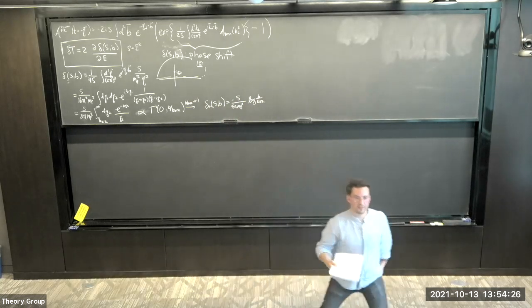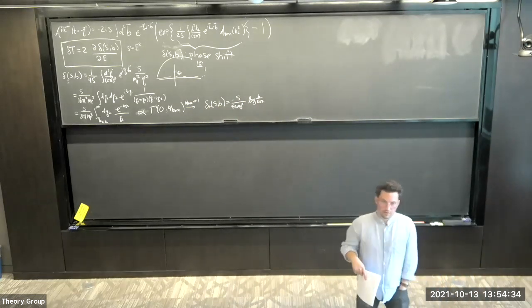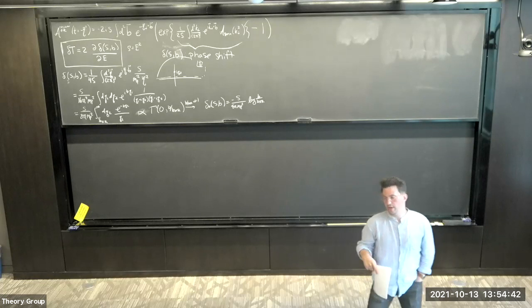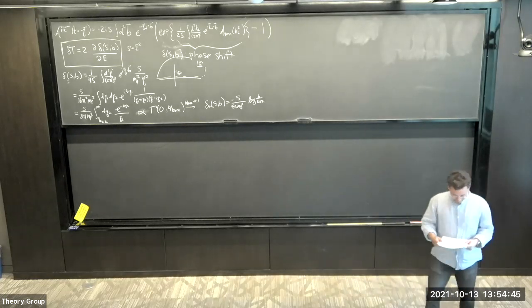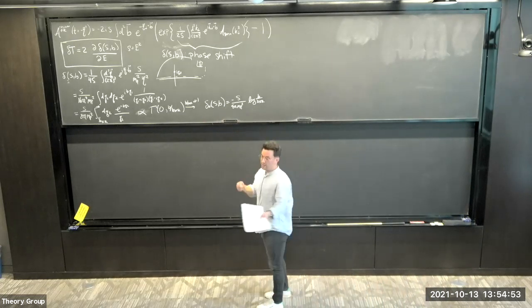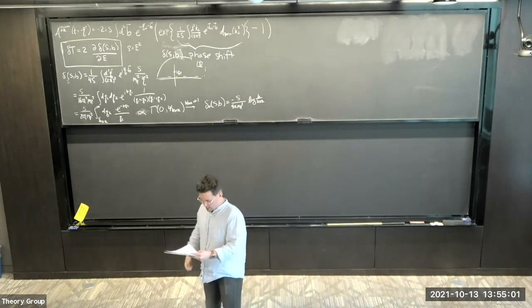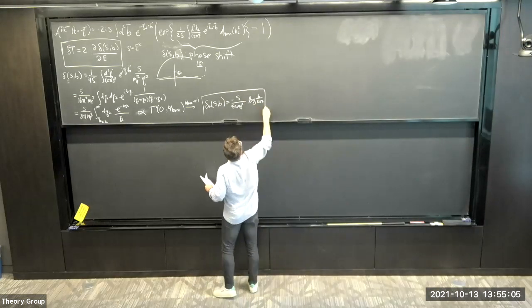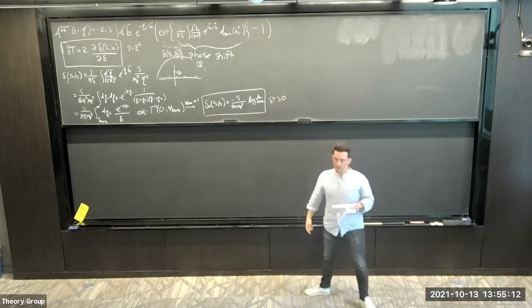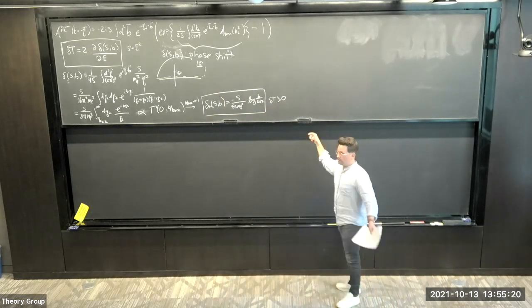If B over B_IR is very small — since B is my actual impact parameter and B_IR is a very large IR scale, much larger than we'll be probing — this gives me something with a definite sign, which is this famous log of B over B_IR. So the time delay Delta T is bigger than zero when B is less than B_IR. This is a definite sign — the pure gravitational contribution has a positive time delay.